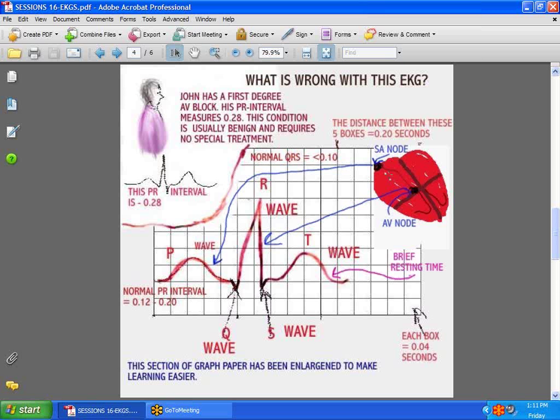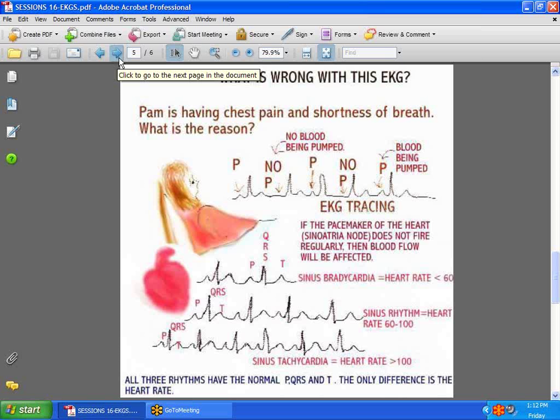What generally happens if the sinoatrial node does not do its job? The heart has a desire to keep working, so you will find that an irritable focus within the atria takes over the job of the sinoatrial node, and that's why we wind up with atrial fibrillation or atrial flutter, simply caused by an irritable focus in the atria taking over the work of the sinoatrial node, which can lead to great problems.